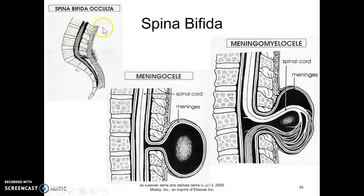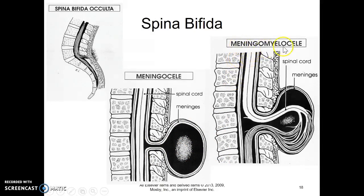With spina bifida occulta, the skin is pulled in — they call it a dimple — where the meninges are caught between two vertebrae. With a meningocele, the meninges come out between two vertebrae and are filled with cerebrospinal fluid. With myelomeningocele, you've got both the meninges and the spinal nerves coming out, pinched between two vertebrae. This can happen anywhere along the spine but is most common in the sacral-lumbar area.